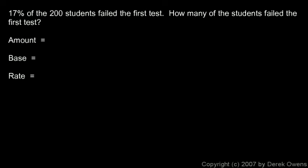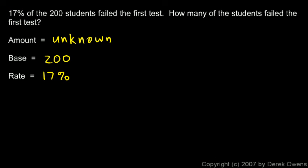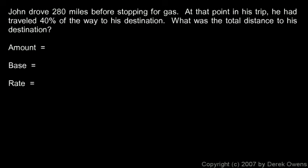Now here's a word problem, because percentages show up in real-world situations and you need to apply this skill to problems that describe something in context. We're told: 17% of the 200 students failed the first test — how many students failed? The amount is our unknown, that's what we're solving for. The base — the total — is the 200 students. The rate is the percentage, 17%.